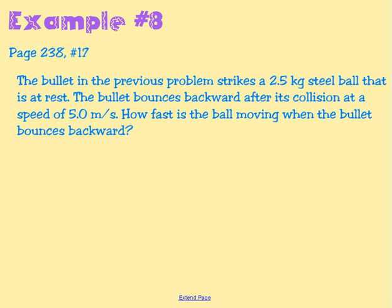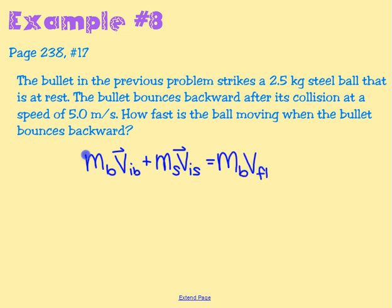Just like in the previous problem, we apply conservation of momentum. We have: mass of bullet times V-initial of bullet, plus mass of steel ball times V-initial of steel ball, equals mass of bullet times V-final of bullet, plus mass of steel ball times V-final of steel ball. The steel ball was initially at rest, so that term cancels to zero. We're solving for V-final of the steel ball.